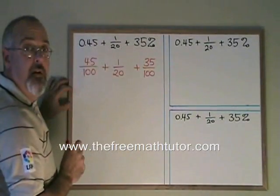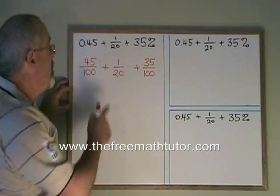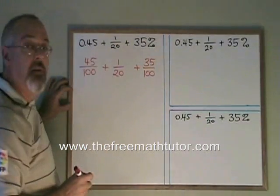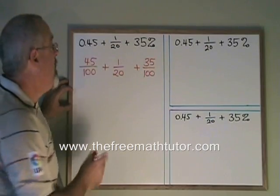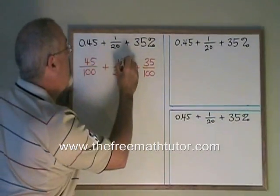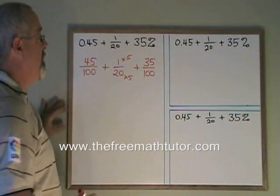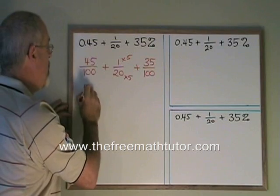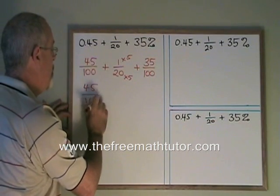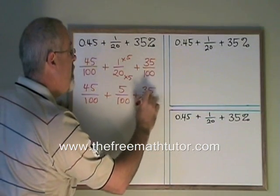To get a common denominator, we have two fractions that already have a hundredth as the denominator. I'm going to choose to expand this fraction so that it also has a hundredth. 20 times 5 will give me a hundredth. 1 times 5 will give me 5 as my new numerator. So I end up with 45 over 100 plus 5 over 100 plus 35 over 100.